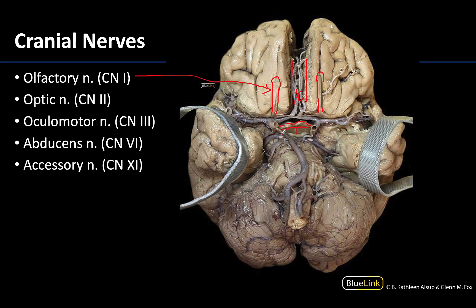You can see a bit of the oculomotor nerve, or cranial nerve 3, which is nestled in between the posterior cerebral and the superior cerebellar artery — a really close relationship between these two branches of the basilar artery. Any increase in size of these arteries, say due to an aneurysm, could compress the oculomotor nerve.